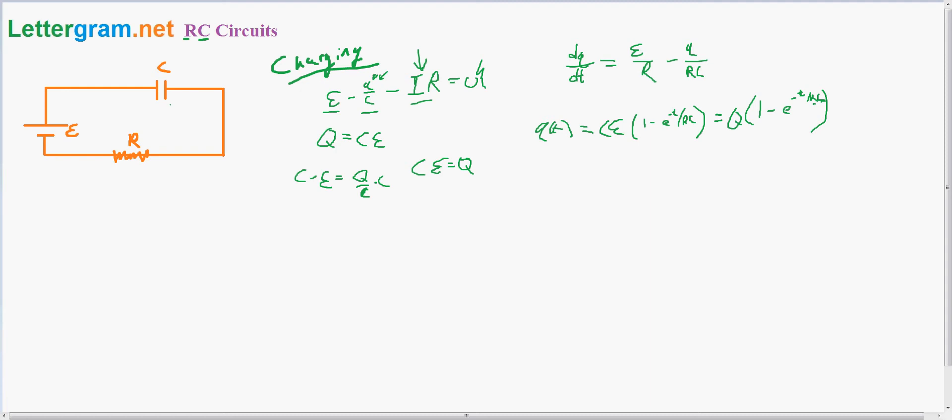You may need to go through my other videos to understand what R equivalent and C equivalent mean, and that's how you can get this if you don't just have one capacitor and one resistor. But this will give you the charge on the capacitor at a specific point or a specific time.